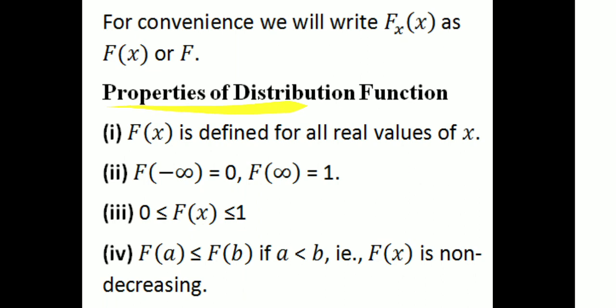Then, properties of the distribution function. The distribution function also has properties. First, F(x) is defined for all real values of x. Second, F(minus infinity) = 0 and F(plus infinity) = 1. We can note that the probability distribution of a random variable x is determined by its distribution function.